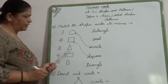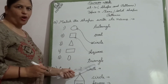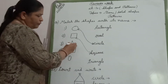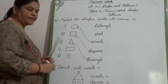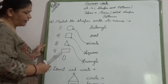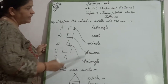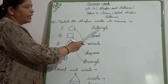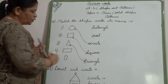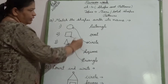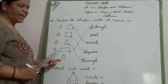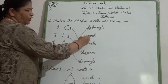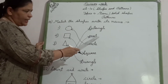The third one is triangle. Here is the spelling of triangle — T-R-I-A-N-G-L-E. So we will match the shape with the spelling of triangle. Now what is this? Rectangle. The spelling of rectangle is R-E-C-T-A-N-G-L-E. So we will match rectangle with the spelling of rectangle. And the last one is oval — O-V-A-L. So we will match the shape of oval with the spelling of oval.